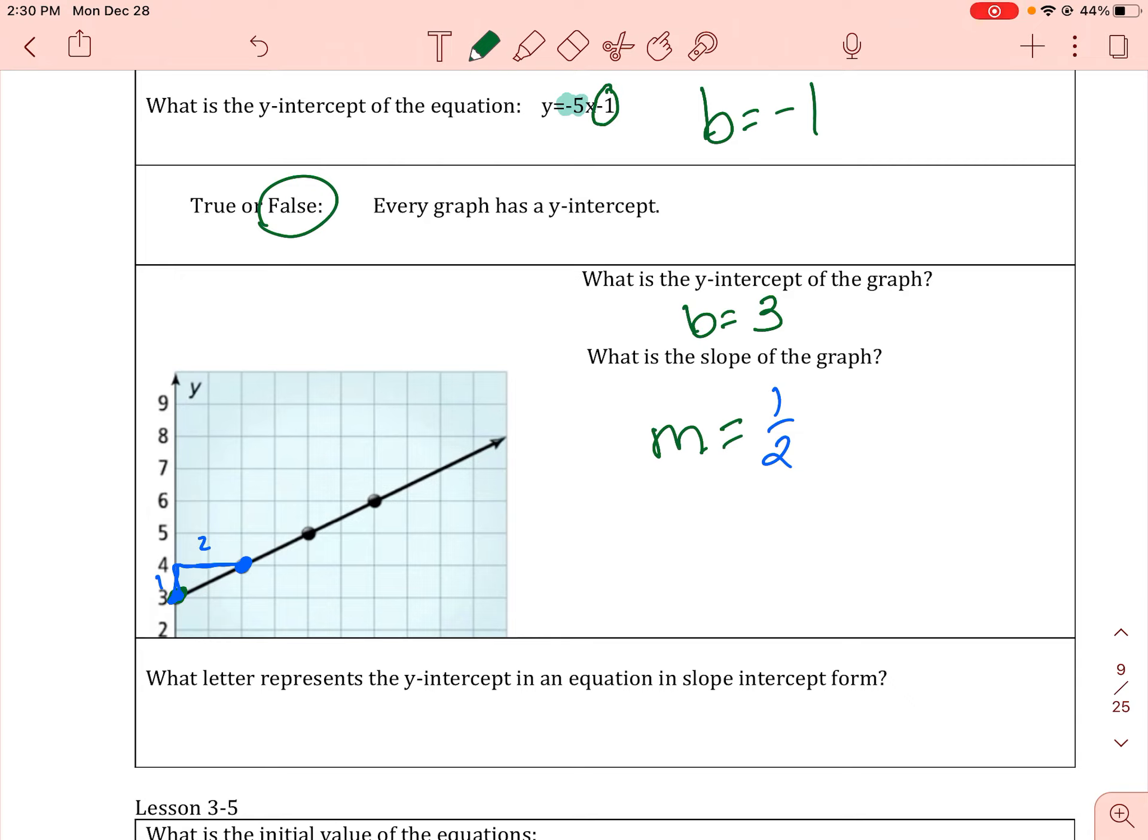What letter represents the y-intercept of an equation in slope-intercept form? That is going to be b.